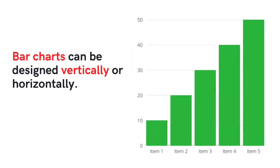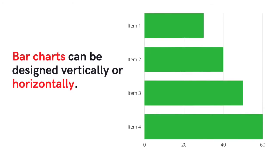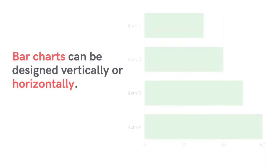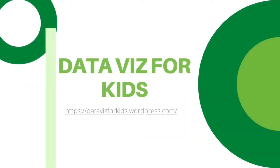Bar charts can be designed vertically or horizontally. A vertical bar chart is sometimes called a column chart. You can find a lot of exercises on our website that will help you build a bar chart.